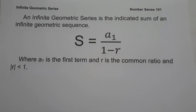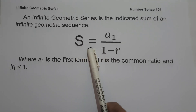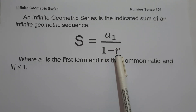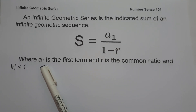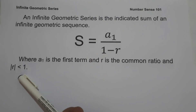For today's video, we are going to talk about how to solve infinite geometric series and explain in detail how we get the answer. When we say infinite geometric series, it is the indicated sum of an infinite geometric sequence. The sum is S equals a sub 1 over 1 minus r, where a sub 1 is the first term, r is the common ratio, and the absolute value of r is less than 1.